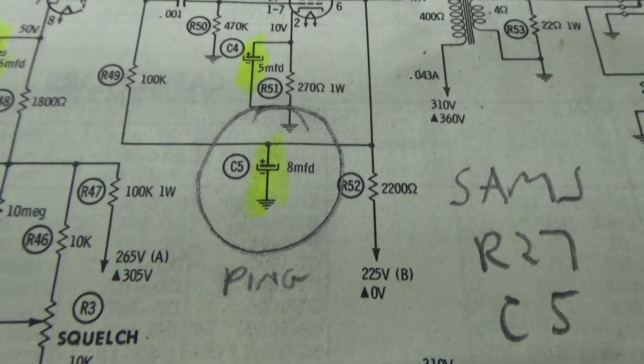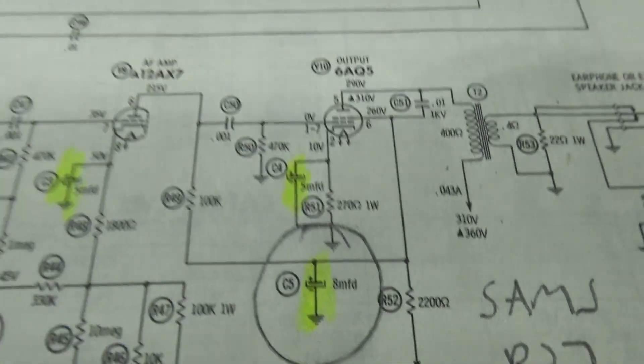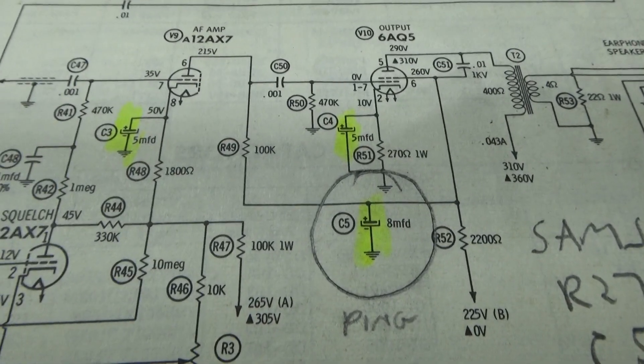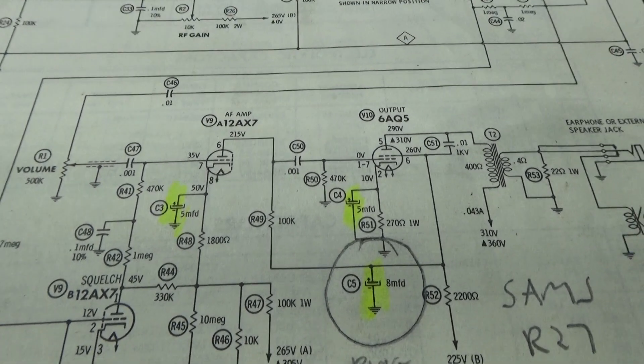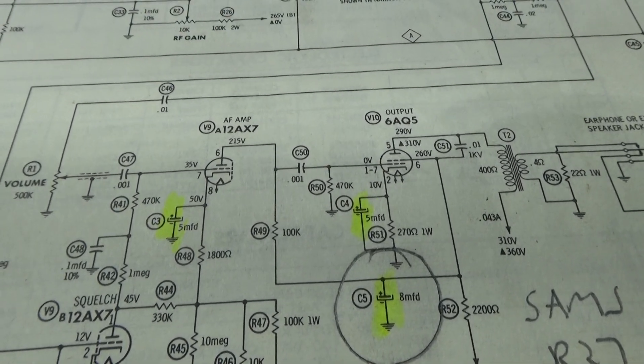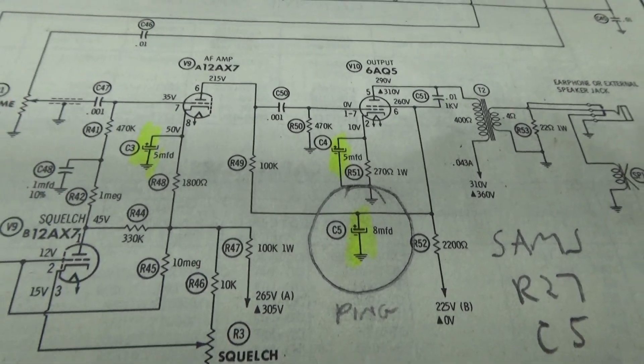That is it on the Sam's, and that is going to be it for this video. Just ping cap location on the pre-Golden Eagle receivers: the Browning R27, R2700, and R2700A.